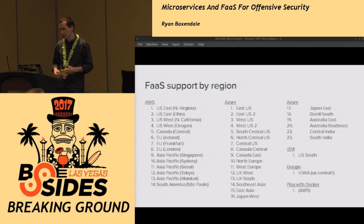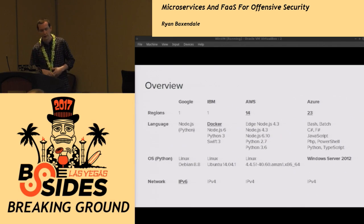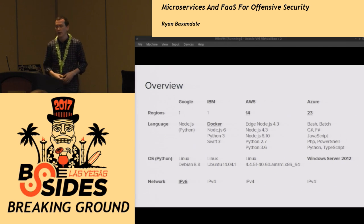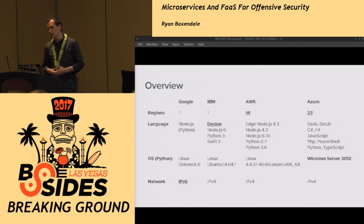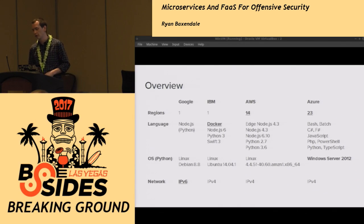Looking across all the different service providers, Amazon and Azure are clearly leading the pack because they have the most support by region. Google gives you IPv6. IBM gives you a Docker image to play with. For AWS you have 14 regions, and Azure you have 23. Azure also supports PowerShell, giving you more flexibility in the scripts that you're running.